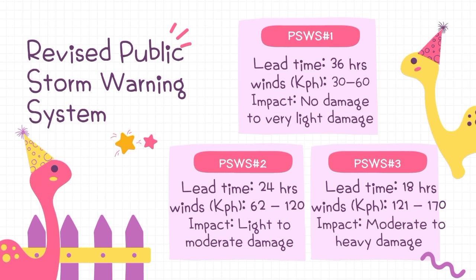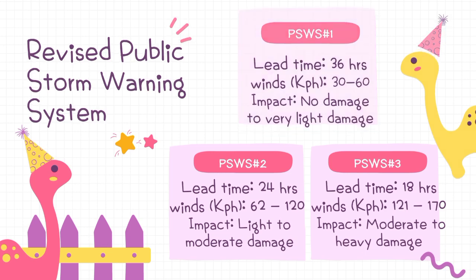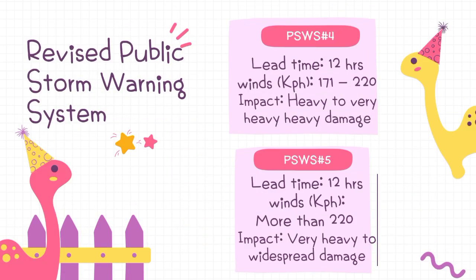PSWS #3 — lead time of 18 hours, wind speed of 121 to 170 kilometers per hour, impact: moderate to heavy damage. PSWS #4 — lead time of 12 hours, wind speed of 171 to 220 kilometers per hour, impact: heavy to very heavy damage.